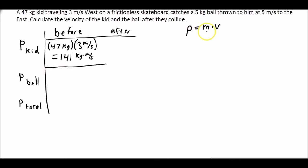For the ball, still using this equation, it's 5 kilograms. And this one is traveling to the east, so it's the opposite direction at 5 meters per second, which means the ball has a momentum of negative 25 kilogram meters per second.